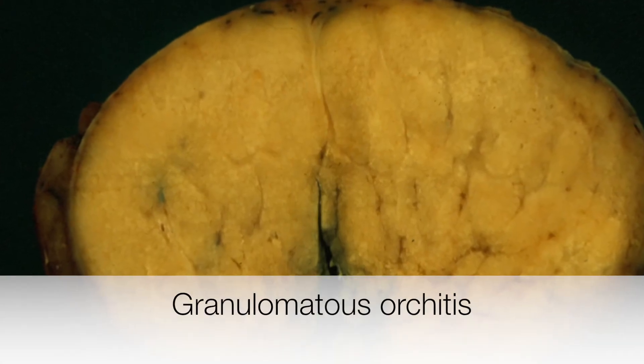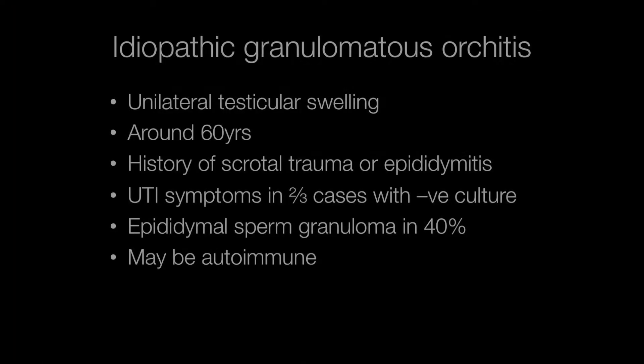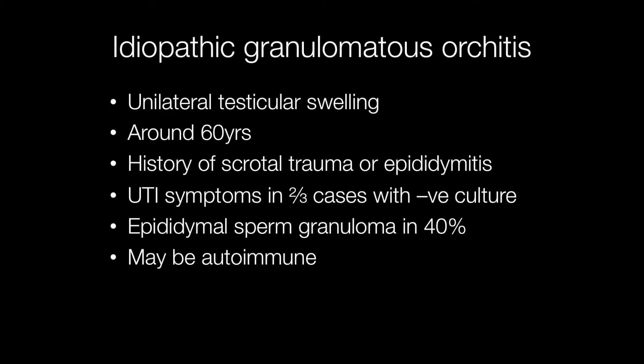This is the gross appearance of granulomatous orchitis. Idiopathic granulomatous orchitis usually presents as a unilateral testicular swelling. The typical age is around 60 years and there is often a history of scrotal trauma or epididymitis, and in two-thirds of cases there may be urinary tract infection symptoms with negative culture. Also in around 40% of cases there may be an epididymal sperm granuloma. One theory is that idiopathic granulomatous orchitis may be auto-immune.